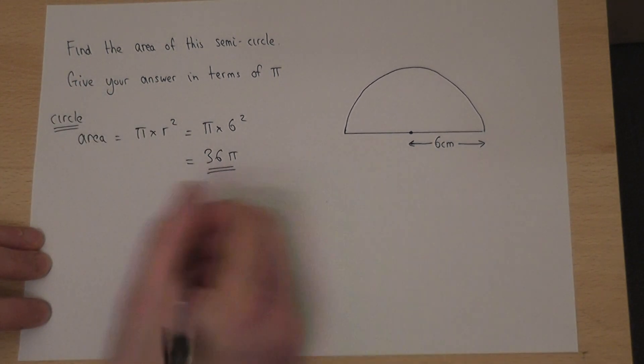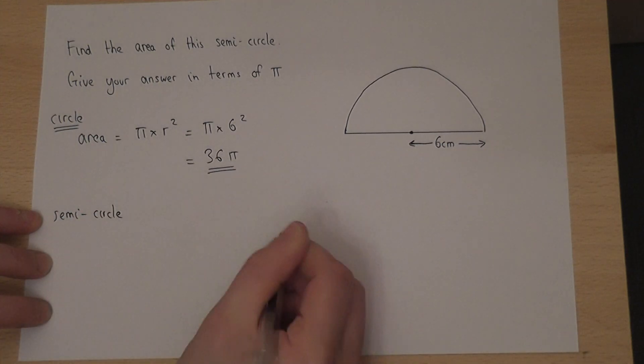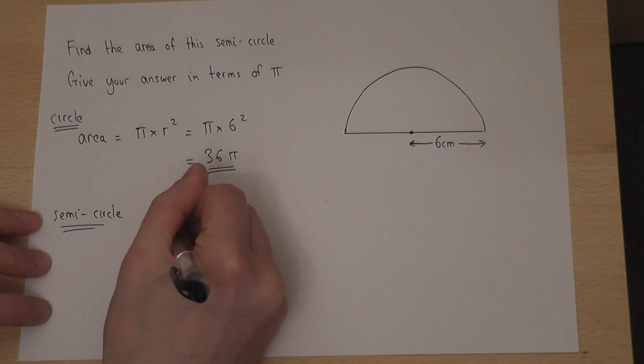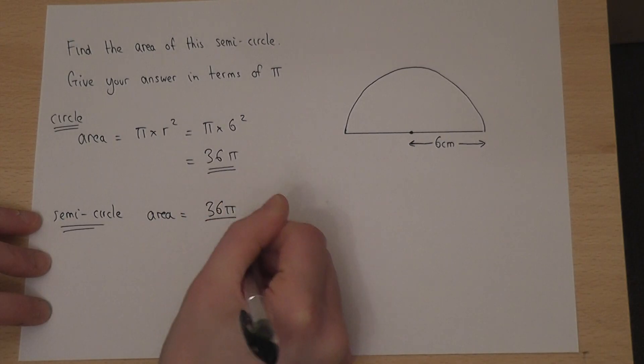Now, because this is a semicircle, we know that a semicircle is half a full circle. So its area will equal 36pi divided by 2.